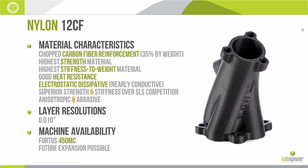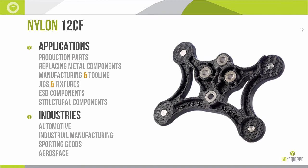For right now, Nylon 12 CF has only been optimized for a 10 thou slice height and to be run on the Fortus 450 alone. As of mid-April 2017, this material has been out for a month — I would expect some of these things to change, but for now it's the Fortus 450 at 10 thou. Applications include production parts — the coup de grâce of 3D printing. With Nylon 12 CF we have a stiffness-to-weight ratio that will rival aluminum, allowing us to start replacing components we typically machined or cast with 3D printed equivalents.